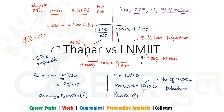Actually the median is 8 lakhs. So around 114 students have 8 lakhs or more, meaning about 20 students definitely have 12 lakhs plus packages.